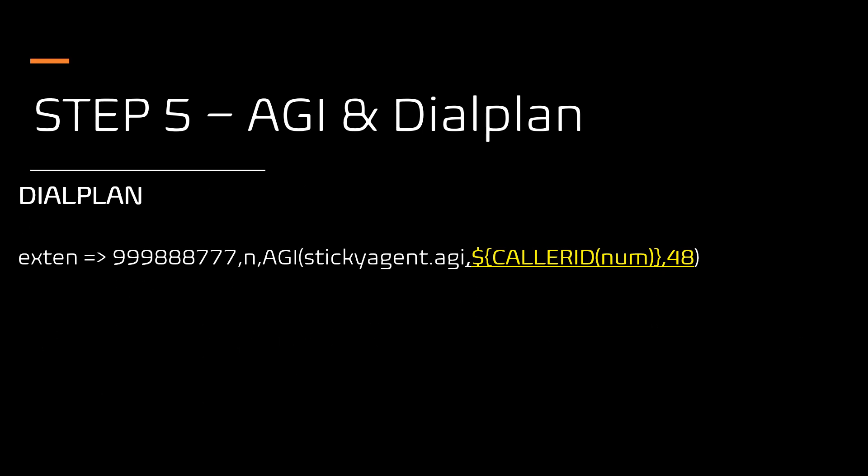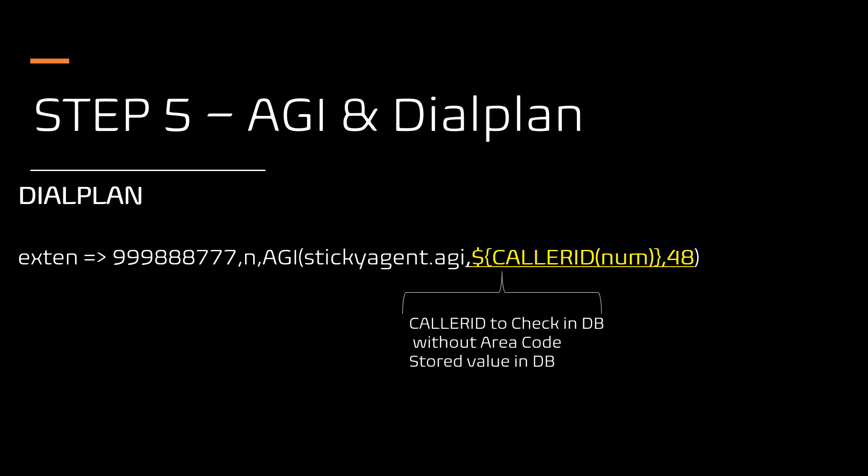In line number two I am sending the actual caller ID and number of hours as variables to the AGI file to query the agent ID. The caller ID should be the exact number without area code or country code, matching the way it's stored in the database. If you want to discard the area code or country code, you need to manipulate the variables — a tutorial for variable manipulation is provided in the description. The next variable is the maximum number of hours to check the database.